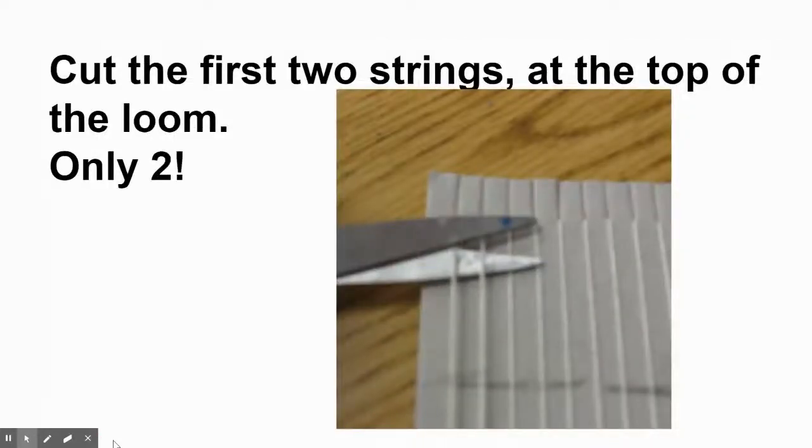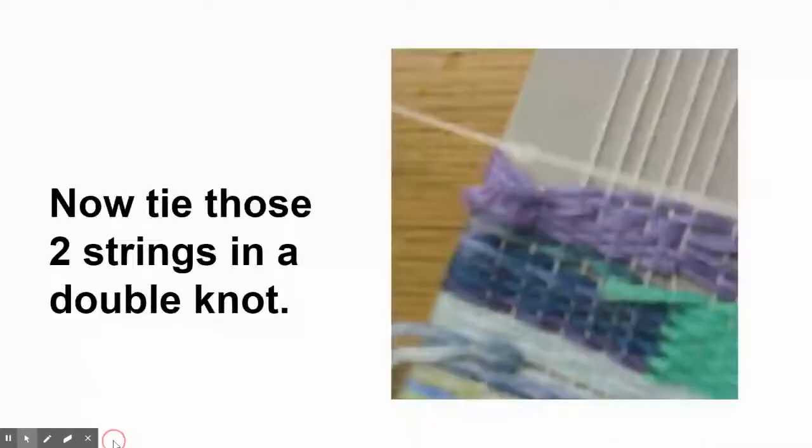This is the really important part. Cut the first two strings at the top of the loom. Only two! Now tie those two strings in a double knot, just like I showed. Double knot them and they're going to tie tight against your yarn. That's why you cut them at the tippy top, so that there's enough string there so you can tie the knot.